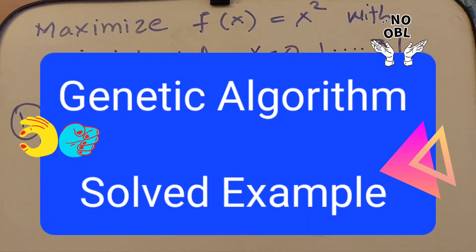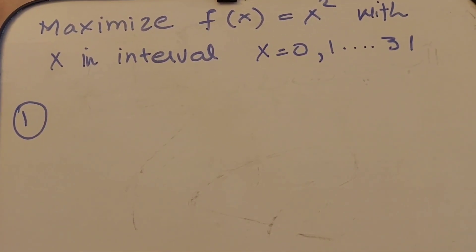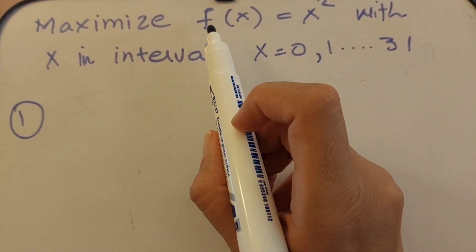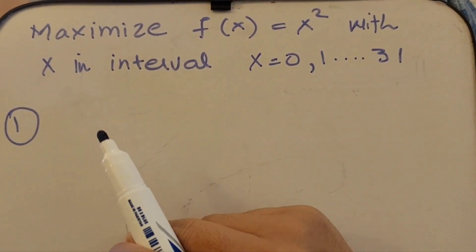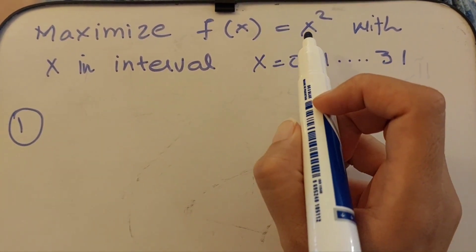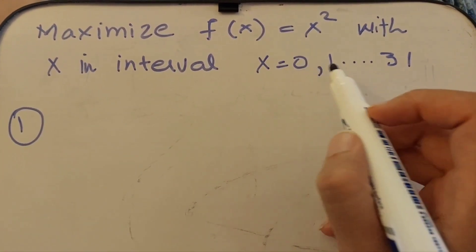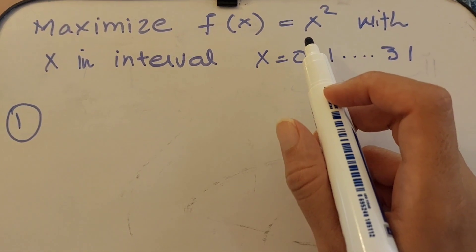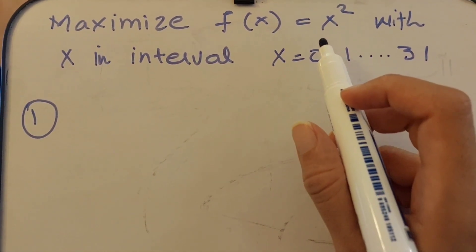In context with the previous videos on genetic algorithms where we explained the concept, we are now going to solve an example. If you want to see the context, you can go to the previous videos to understand the complete procedure. We are given that we have to maximize the function f(x) = x² with x in the interval 0 to 31. To save time instead of trying all values, we are going to use this heuristic: genetic algorithm.